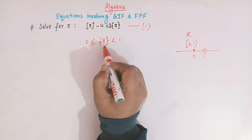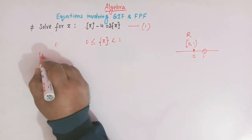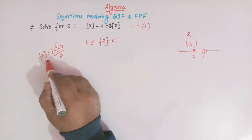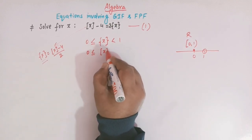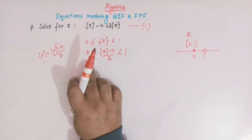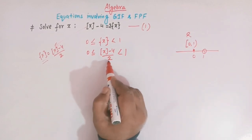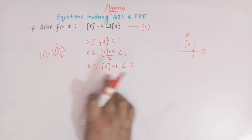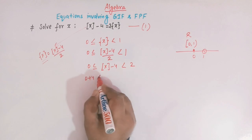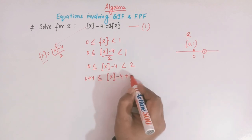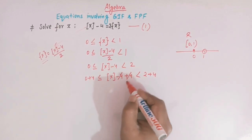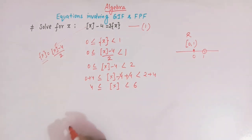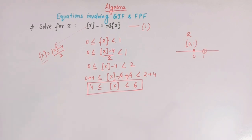From equation 1, we can write the fractional part of x is equal to the greatest integer of x minus 4, all over 2. Substituting this into the inequality and multiplying throughout by 2, then adding 4 throughout, we get: 4 is less than or equal to the greatest integer of x, which is less than 6.